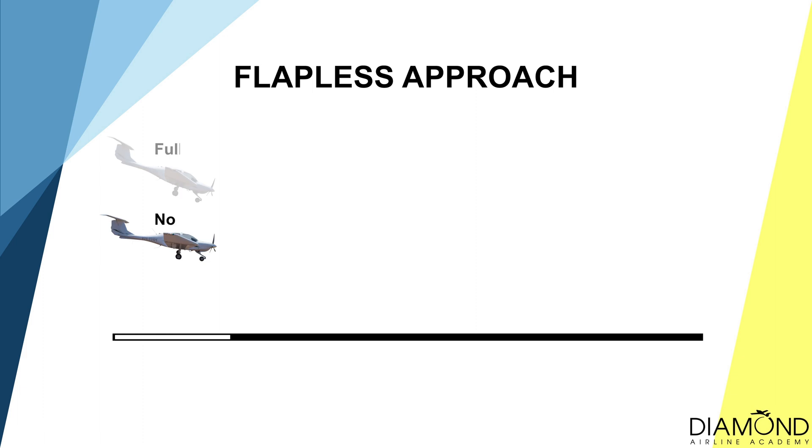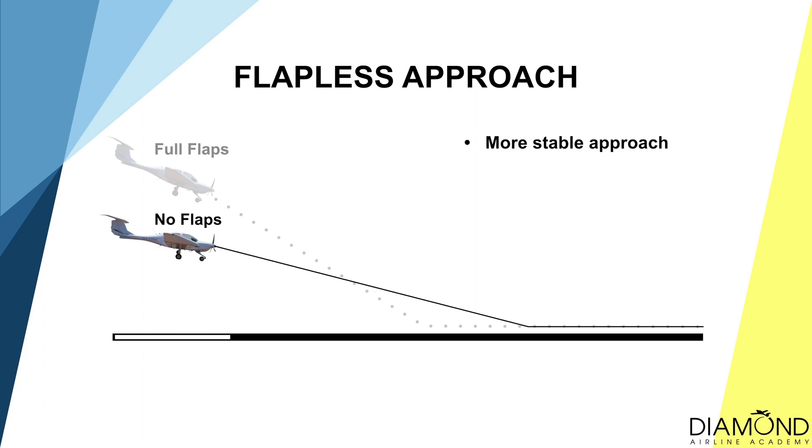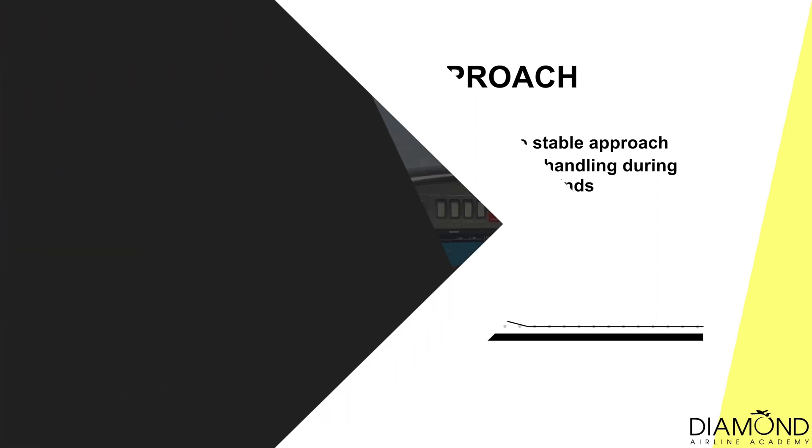Secondly, the aircraft will be more difficult to handle with the presence of crosswind. In strong crosswind conditions, it could lead to an unstable approach, and when that happens, please remember going around is always an option. Thirdly, conducting a flapless approach during strong crosswind conditions can stabilise the approach, making it easier to handle during gusty conditions.